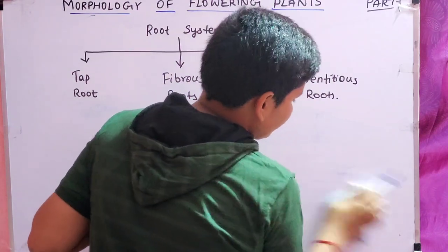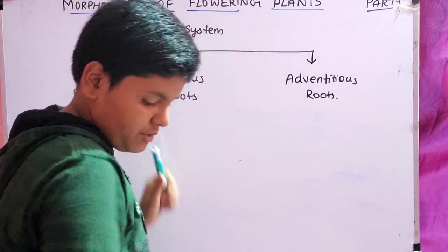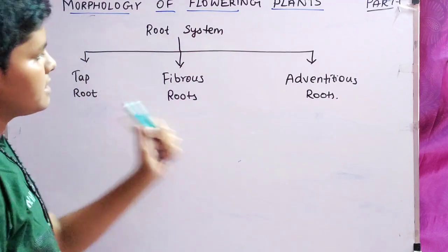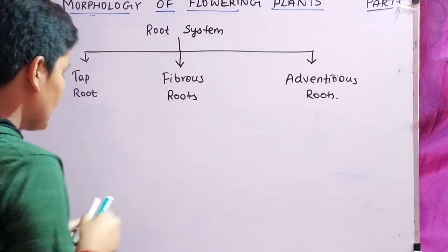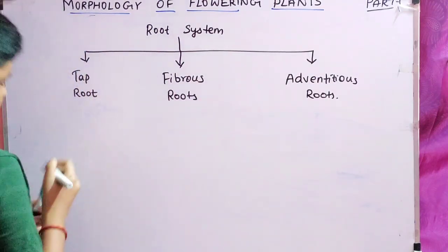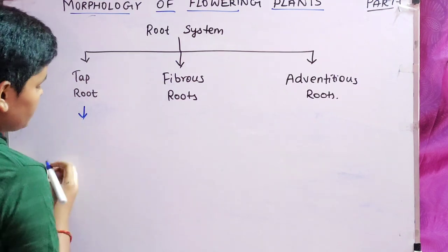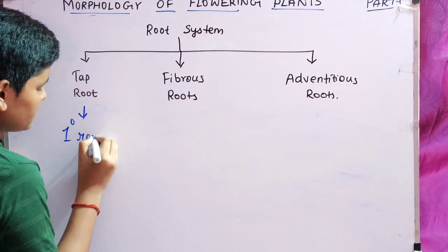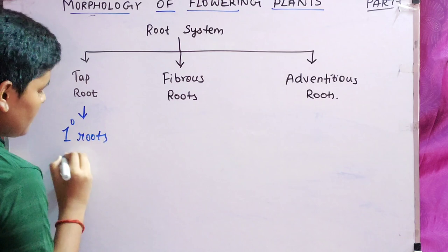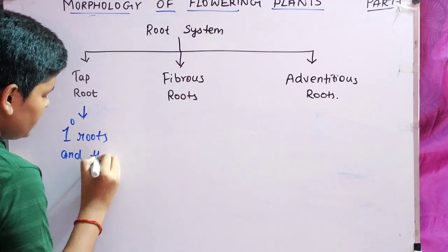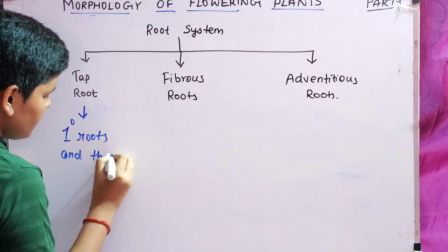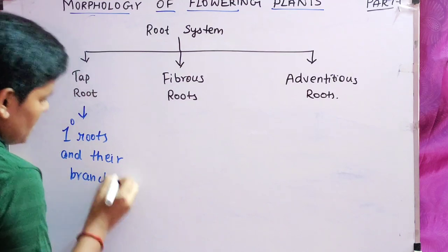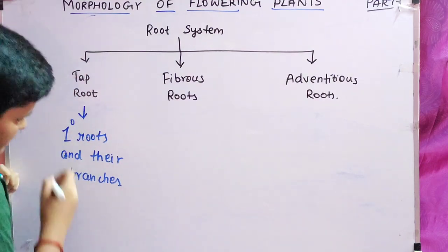Now we have the three types of roots: tap root system, fibrous root system, and adventitious root system. What is the tap root system? The tap root system consists of the primary root and its branches.